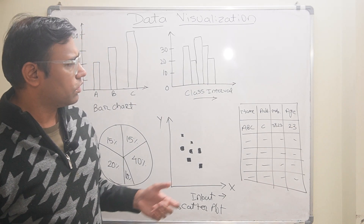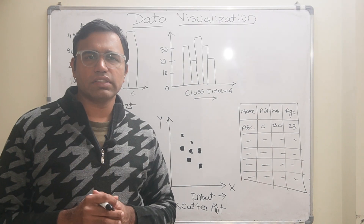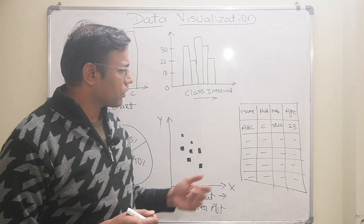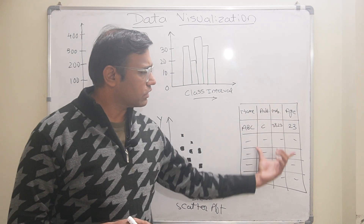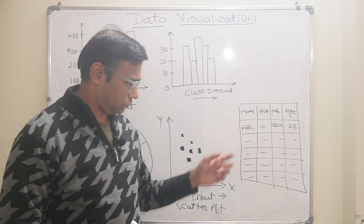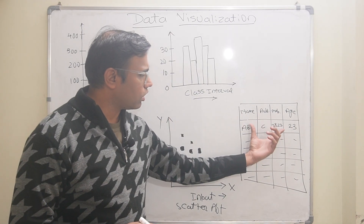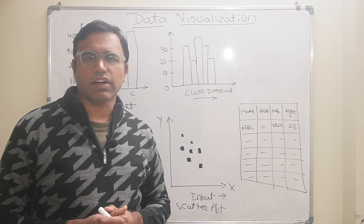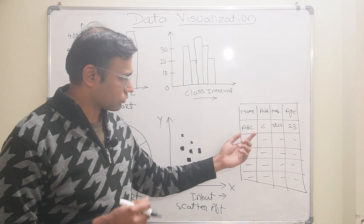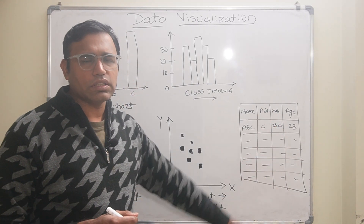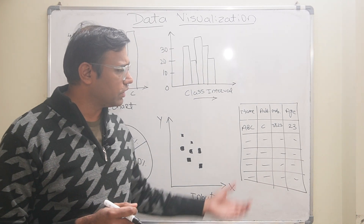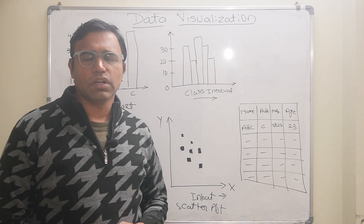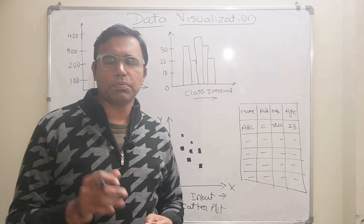If you want to analyze data, it is better if it is arranged in rows and columns. But if there is a database with thousands of columns and lakhs of rows, then it is very very difficult to analyze the data through eyes, and it is very difficult to draw any conclusion from it.